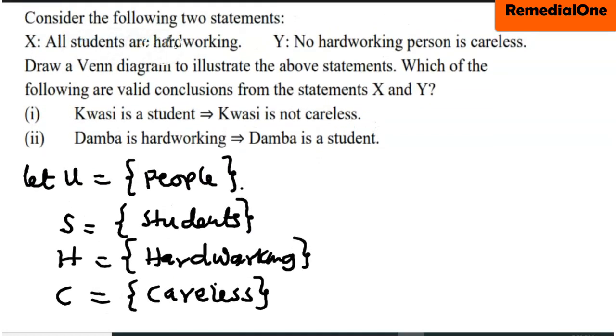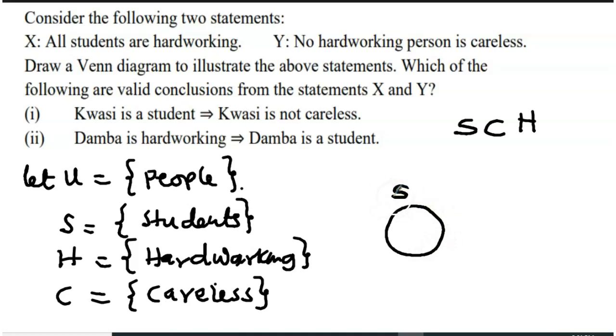All students are hardworking, which means that students are a subset of hardworking. How do you draw that? So you draw a set of students, which is S, and then you draw a bigger circle.